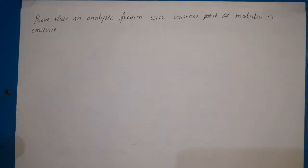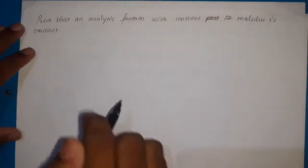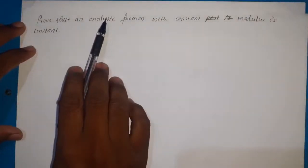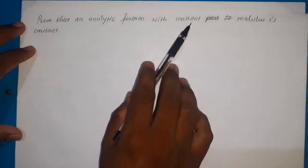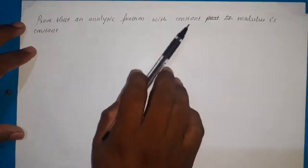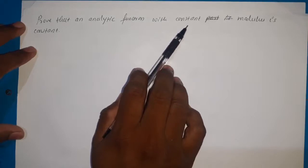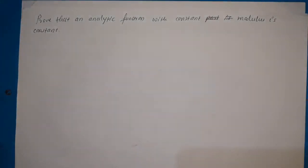The first example is: prove that an analytic function with constant modulus is constant. Here it is given that an analytic function having constant modulus, and we need to show that that function is a constant function.